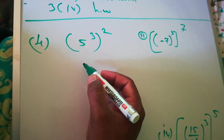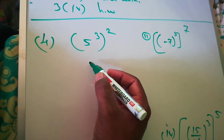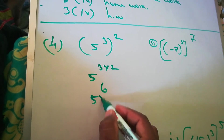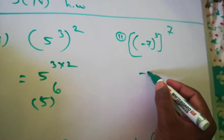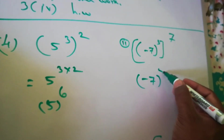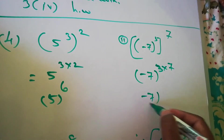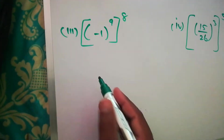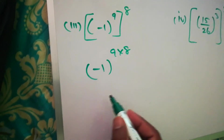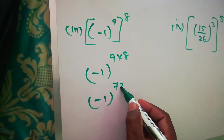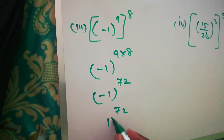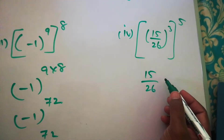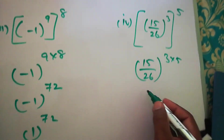Question number 4: Simplify and express in exponential form. (5^3)^2: write as 5^(3×2) = 5^6. Second: (-7)^(3×7) = (-7)^21. Third: (-1)^(9×8) = (-1)^72. Since (-1)^72 means (-1) raised to an even power, it equals 1^72, which is just 1. Next: (15/26)^(3×5) = (15/26)^15.